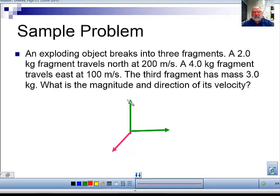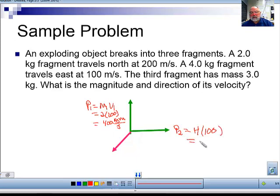So the momentum of the northbound one is equal to mass times velocity, which is 2 times 200, or 400 kilograms meters per second, and that's in the north direction. The one going east, P2, is equal to 4 kilograms at 100. Equals 400 kilograms meters per second. Well, what is this one?